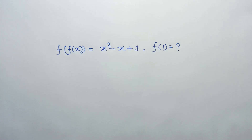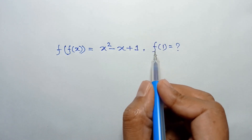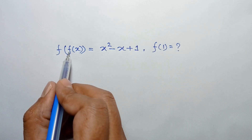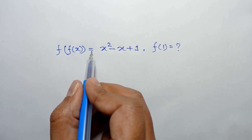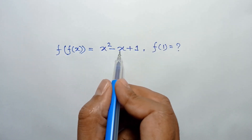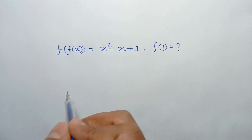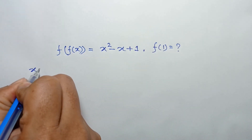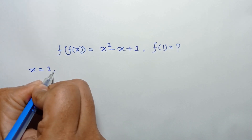Hi everyone, in this video I am going to solve a nice math olympiad problem which was set for the Iran math olympiad contest. We have to find the value of f(1), where f(f(x)) is equal to x squared minus x plus one.